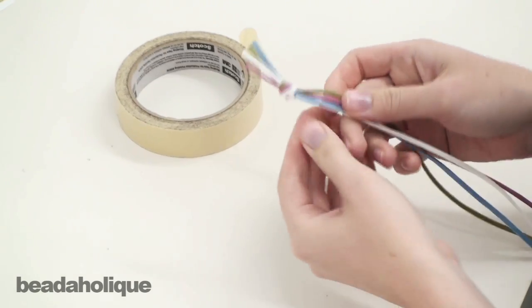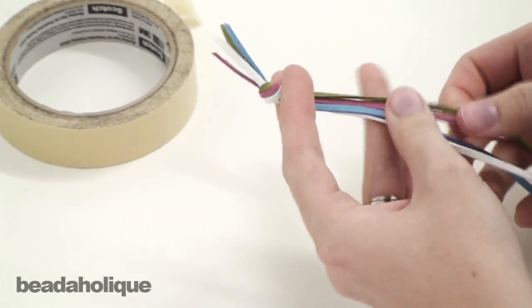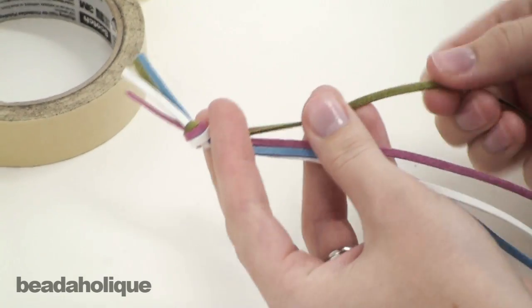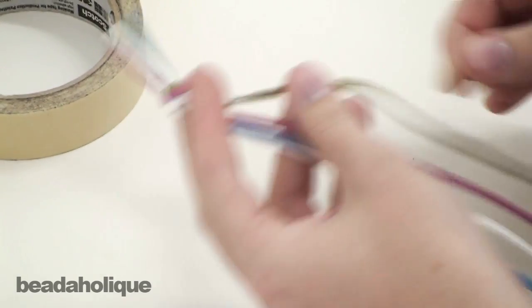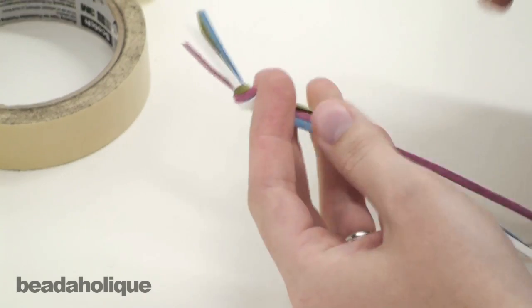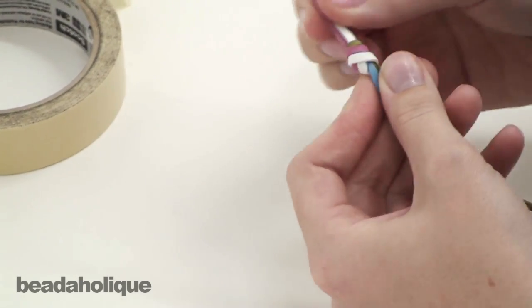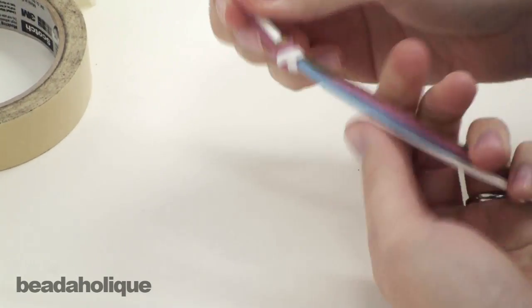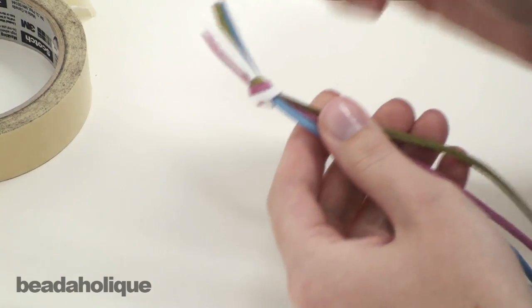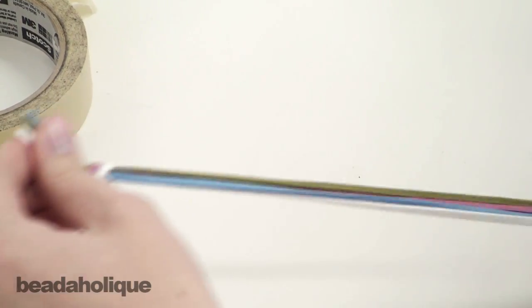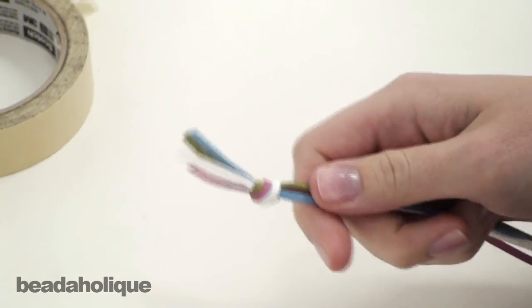What you're going to do is take four pieces of flat cord. I have this microfiber faux ultra suede and tie them together in an overhand knot. I'm using four colors just so that you can keep track of which strand is which. Of course, you can use all one color like I did in this braid here.